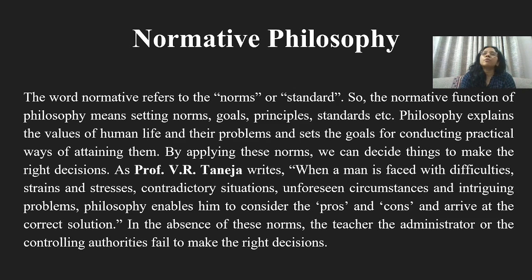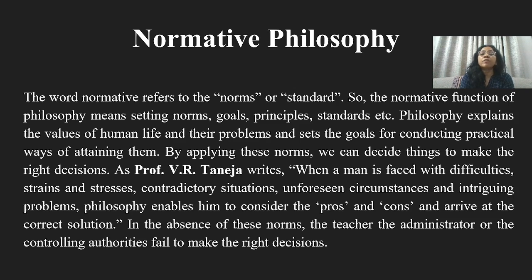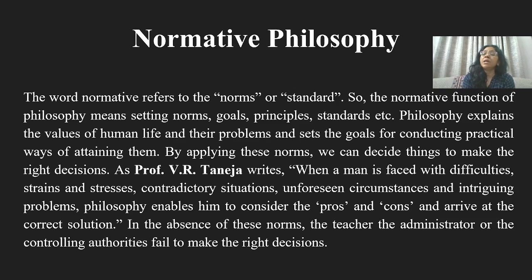Let us take them one by one. The word 'normative' comes from 'norm,' and norms means standards. So normative philosophy is the philosophy that tells us norms — what is right, what is wrong, what to do, what not to do. The word normative refers to the norms or standards. So the normative function of philosophy means it sets standards, determines goals, and establishes principles. Philosophy explains the values of human life, addresses problems, and sets goals with practical ways of attaining them.